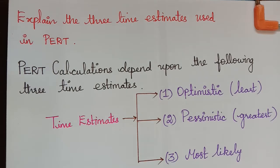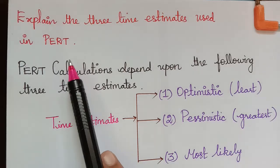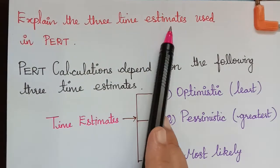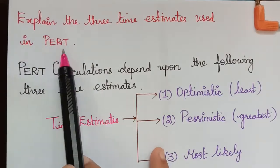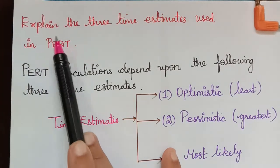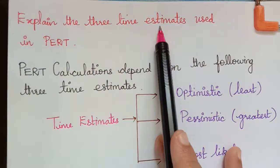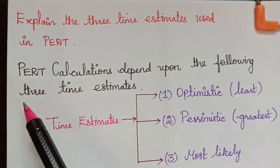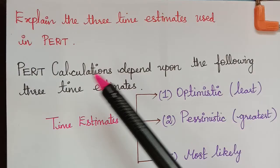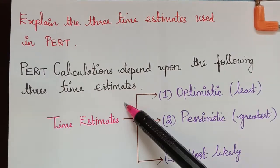Hello students. Here we have a very important question under the topic PERT analysis: explain the three time estimates used in PERT. We all know that PERT analysis is probabilistic in nature and therefore it has time estimates. There are three time estimates for PERT analysis, and the PERT calculations depend upon the following three time estimates.